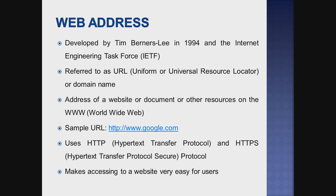A URL is the address of a website, document, or other resource on the WWW. A sample URL is HTTP://www.google.com. When we type this address, we can get the Google web page. It uses HTTP and HTTPS. HTTP is a request-response protocol on the application layer. HTTPS is the secured version — it is an encrypted format of HTTP, used when accessing secured information.